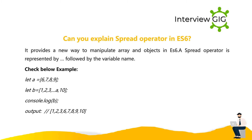Can you explain the spread operator in ES6? It provides a new way to manipulate arrays and objects. A spread operator is represented by '...' followed by the variable name. Example: let a = [6, 7, 8, 9]; let b = [1, 2, 3, ...a, 10]; console.log(b); Output: 1, 2, 3, 6, 7, 8, 9, 10.